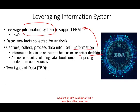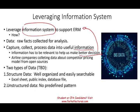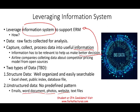We have two types of data. Structured data is well organized, easy to search and analyze — Excel sheets, public indexes, database files — basically rows and columns with numeric figures where you can run averages, regressions, and so on. Unstructured data doesn't have a predefined pattern — emails, Word documents, photos, websites, text files — information all over the place that you try to make sense of. Both types of data are important.